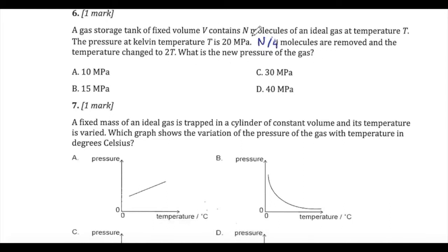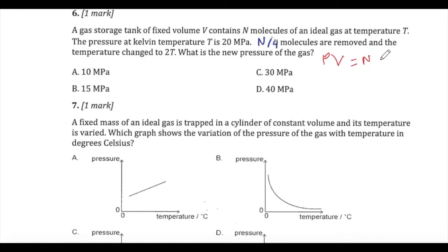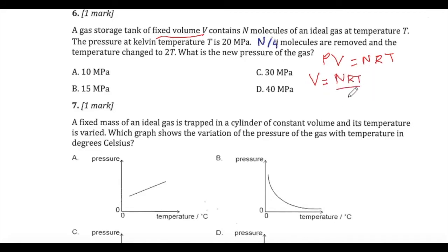Question six was solved in class, but here is an alternative approach. This is a useful strategy for many multiple choice questions: you are given a fixed volume V, n molecules of an ideal gas at temperature T and pressure P, then the parameters change. This is a PV=nRT situation. Rearranging for volume: V = nRT/P. Since volume is constant, this ratio stays constant across both cases.